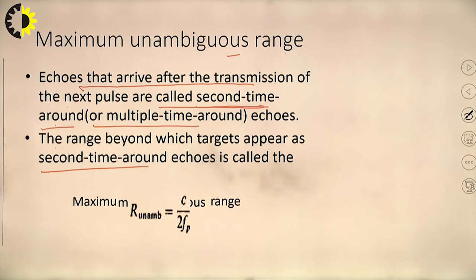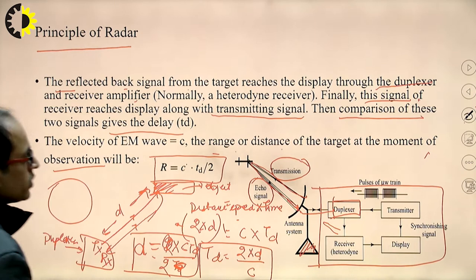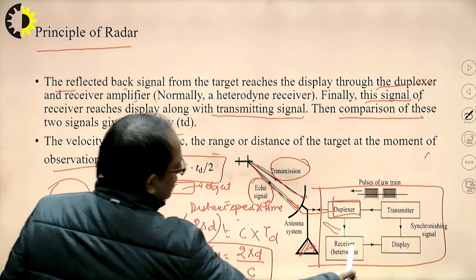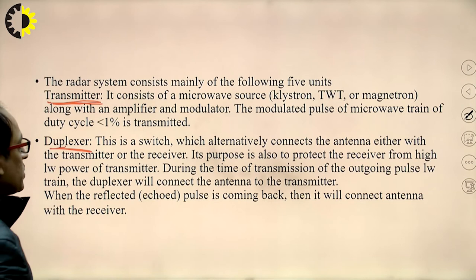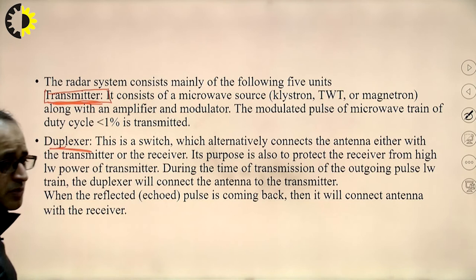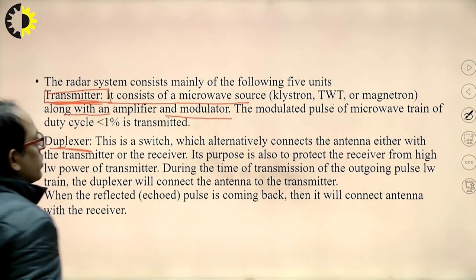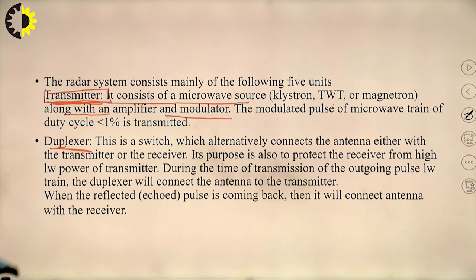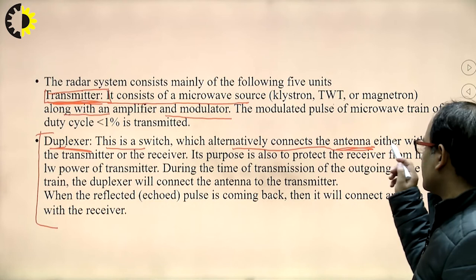The radar system consists mainly of five units: transmitter, duplexer, antenna, receiver, and display. The transmitter generates a microwave signal using a microwave source such as a klystron, TWT, or magnetron along with an amplifier and modulator, and sends it to the duplexer. The duplexer contains a switch which alternately connects the antenna either to the transmitter or the receiver.